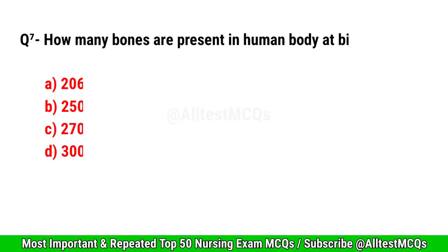Question No. 7. How many bones are present in the human body at birth? Correct option is C. 270.